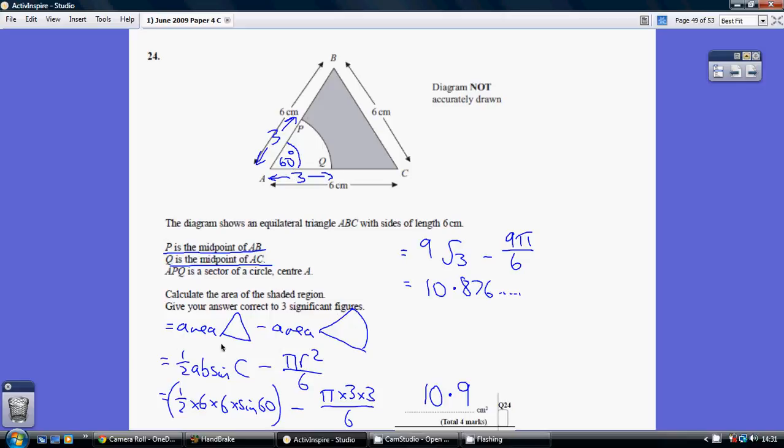So how do we work out the area of a triangle? It's half ab sin C. We've got our lengths a and b being 6 each and our angle being 60. So half times 6 times 6 times sin 60. That's the area of the triangle.